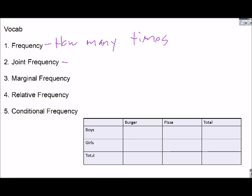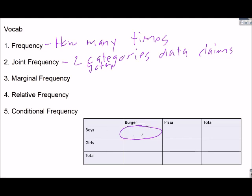Joint frequency is I have two categories. What's the likelihood that both? So that means that there are two categories and the data claims both. So my category is burgers and boys. What is the likelihood I pick a boy who is in the burger category? Same thing, I had a girl who picked pizza. My category was pizza and my category was girls, and so they're in that box. That's what joint.